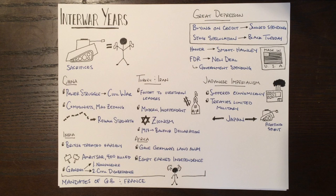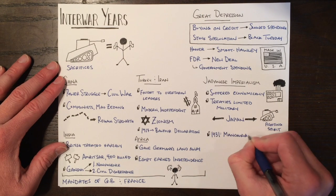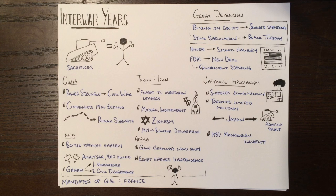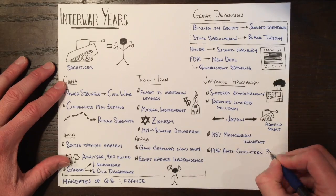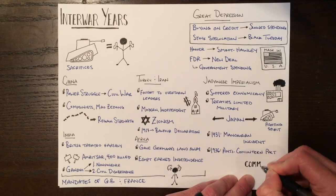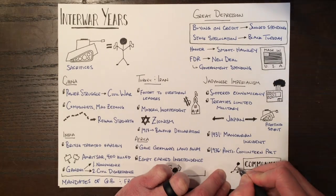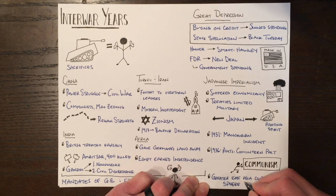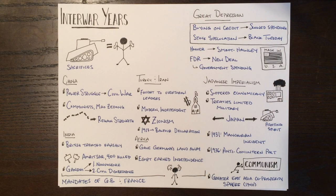In 1931, the leaders decided to expand into China to gain access to raw materials. After years of fighting, an alliance of nations in Asia to combine resources and become independent of Western nations was made. In 1936, Japan signed a pact with Germany to oppose the spread of communism. The issues introduced in this video will have long-term impacts on what happens next with the world.